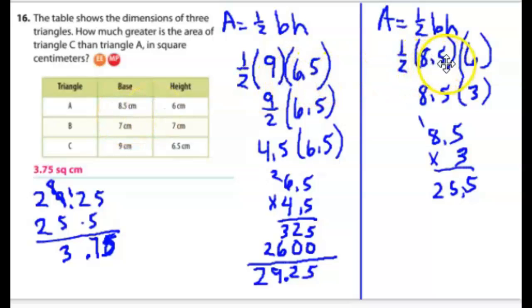Same thing. Base is 8 and five-tenths. Height is 6. One-half times 6 is 3. 8 and five-tenths times 3. 8 and five-tenths times 3 is 25 and five-tenths. So when I line these up and subtract it, I get 3 and 75 hundredths square centimeters.